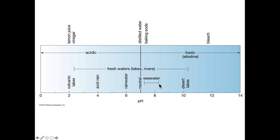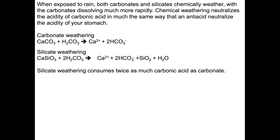When exposed to rain, carbonates and silicates are both going to weather chemically, but carbonates dissolve more rapidly — they're more susceptible to acids than silicates. This chemical weathering neutralizes the acidity of carbonic acid in the same way that an antacid neutralizes the acidity of your stomach. That's why people take Tums, which are dolomite — you're consuming carbonate minerals to neutralize the stomach acid. In carbonate weathering, calcium carbonate (calcite) plus carbonic acid yields a calcium ion and two bicarbonate ions.